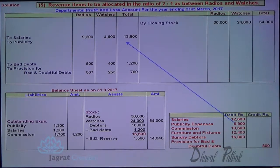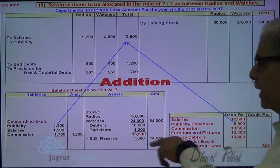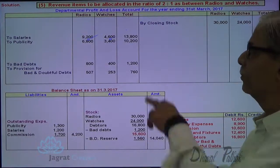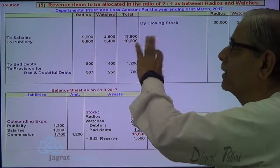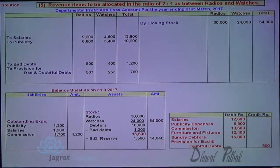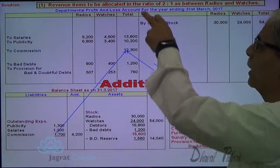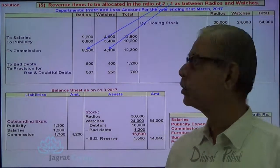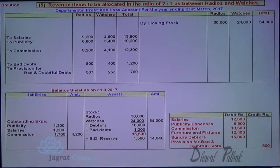Next item — publicity expenses: 8,900 plus outstanding 1,300. Adding these two numbers gives 10,200, and that will be bifurcated in the ratio of 2 to 1. So two-thirds of 10,200 and one-third of 10,200 are debited to respective department accounts. Commission: 10,600 plus 1,700 — record the total in the total column, then bifurcate in the ratio of 2 to 1. Two-thirds of 12,300 goes to radio department and one-third of 12,300 goes to watches department. This is how this adjustment is considered.